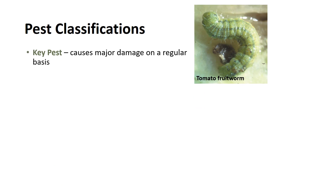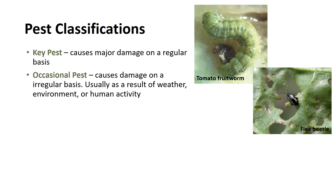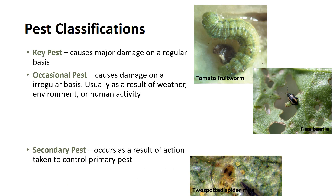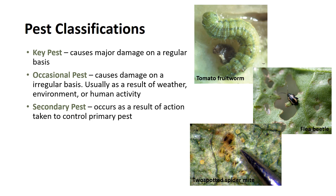Pests can be classified as key pests, occasional pests, or secondary pests. Key pests may cause major damage on a regular basis unless controlled. In tomatoes, for example, tomato fruit worm is a key pest because it often requires regular control efforts to prevent economic damage to the crop. Occasional pests become intolerable only irregularly, often due to climate, environmental influences, or as a result of human activity, such as flea beetles. Secondary pest problems occur as a result of actions taken to control a key pest. For instance, aphids, soft scales, and spider mites can become secondary pests when pesticides applied to control caterpillars kill their natural enemies. Often secondary pest weeds are tolerant or resistant to the herbicides applied to control key weeds, or were previously suppressed by competition from the key weeds.